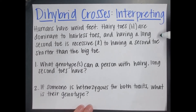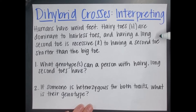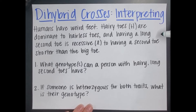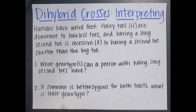Here is our example. Humans have weird feet. Hairy toes are dominant to hairless toes, and having a long second toe — a second toe longer than your big toe — is recessive to having a second toe shorter than the big toe. From that information we need to answer: what genotype or genotypes can a person with hairy long second toes have?